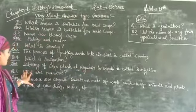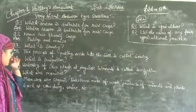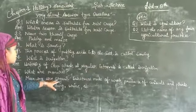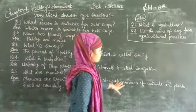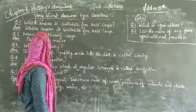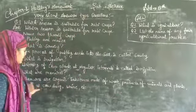What are manures? Manures are organic substances made of waste products of animals and plants such as cow dung, urine, etc.